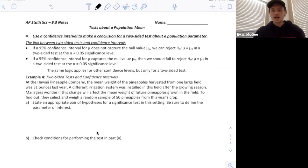The last objective is using a confidence interval to make a conclusion from a two-sided test about a population parameter, in this case a population mean. Really we've talked about this before. You should remember there's a link between two-sided tests and confidence intervals.